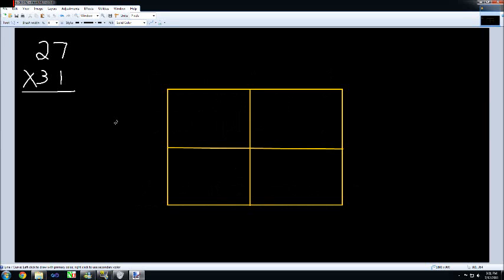Today I'm going to demonstrate the box method of multiple digit multiplication. If you look up in the corner, you'll see that we have the number 27 times 31. Because you have two digits by two digits, you will draw a two by two box.